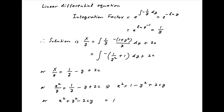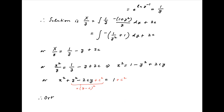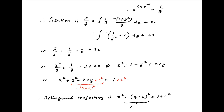Adding c square to both sides, note that y square minus 2cy plus c square is equal to (y minus c) whole square. Therefore the orthogonal trajectory is given by x square plus (y minus c) whole square is equal to 1 plus c square, which is the required answer.